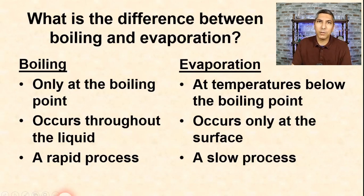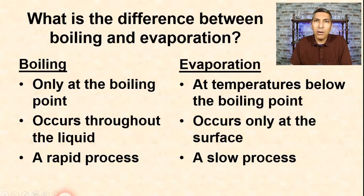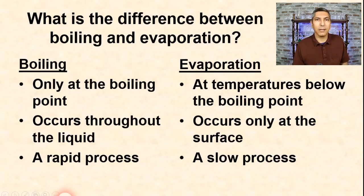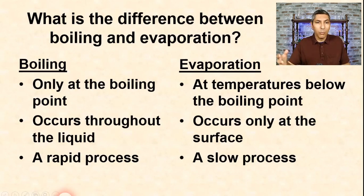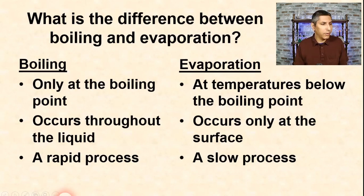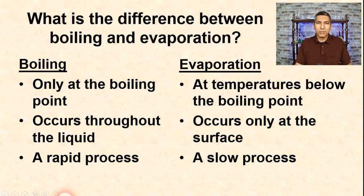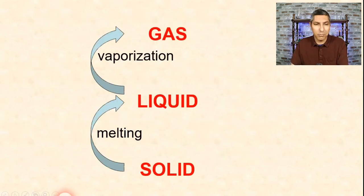Most of us understand the difference intuitively. If you put a pot of water on the stove and turn on the heat, you say you're going to boil some water — not evaporate it. Likewise, if you spill water on the ground and come back the next day to find it gone, you'd say it evaporated — not that it boiled off the floor. These are the two types of vaporization.